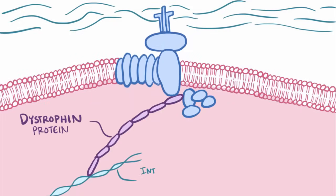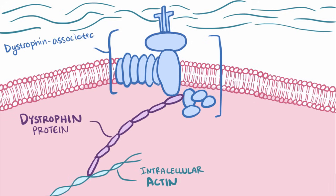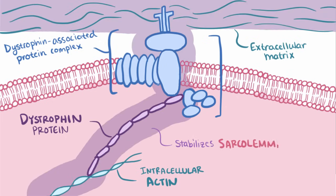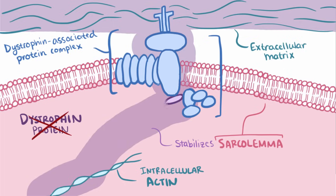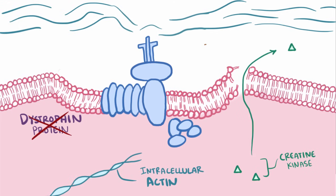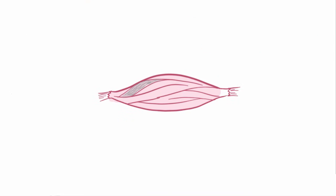The dystrophin protein links intracellular actin with the dystrophin-associated protein complex, which is a cluster of cytoplasmic and cell membrane proteins anchored to the extracellular matrix around the muscle cell. Making that link between the cytoskeletal actin and the extracellular matrix stabilizes the sarcolemma, or muscle cell membrane, in the same way that a large wooden support beam running along the roof keeps the house sturdy. Without the support of dystrophin, the sarcolemma wilts and becomes unstable, cellular proteins like creatine kinase begin escaping, calcium enters the cell, and this ultimately leads to cell death.